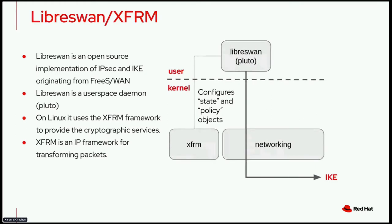The two software components that provide IPSec services for OVN-Kubernetes and OpenShift are LibreSwan and XFRM. LibreSwan is an open-source implementation of IPSec and IKE, and it's a user-space application. XFRM is a kernel-space framework that provides the cryptographic services required for encrypting traffic between two hosts. Pluto is the main LibreSwan daemon, and its responsibility is negotiating security associations with remote hosts.